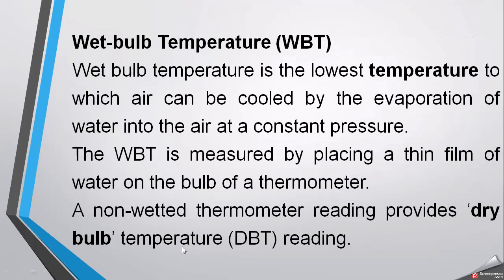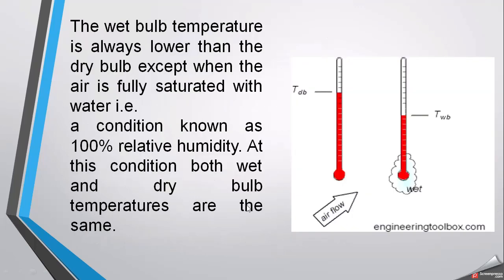Now we will explain the important term: wet bulb temperature. There are two terms — wet bulb temperature and dry bulb temperature. Wet bulb temperature is the lowest temperature to which air can be cooled by evaporation of water into the air at constant pressure. It is measured by placing a thin film of water on the bulb of a thermometer. When this water layer is present around the bulb, the temperature reading is called the wet bulb temperature.